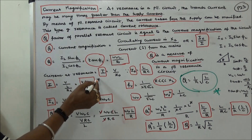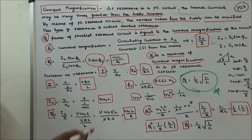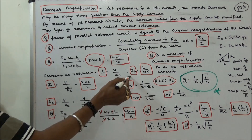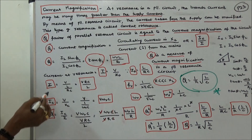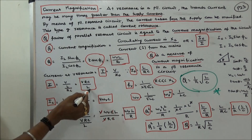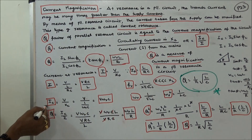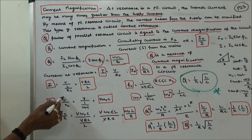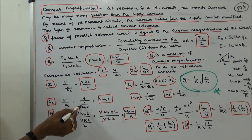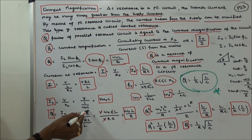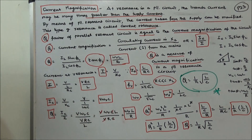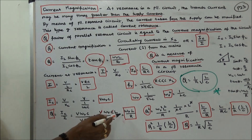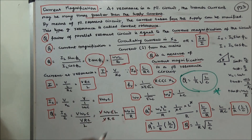Alternatively, the current at resonance I is equal to V divided by Z₀, where Z₀ is the dynamic impedance equal to L by RC. Therefore I equals V·RC divided by L. IC is equal to V divided by XC, and XC equals 1 by ωR·C, so IC equals V·ωR·C. Thus Q equals IC by I, which gives ωR·L divided by R.